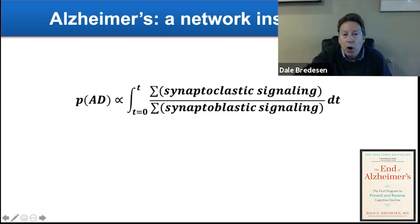When you sum up all the different things that are synaptoclastic, that are pulling back, divided by all the different things that are growing forward, the synaptoblastic signaling. So when we want to treat people, we want to identify those, we want to reduce the synaptoclastic signaling and increase the synaptoblastic signaling.